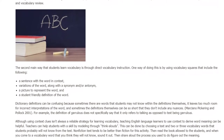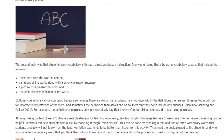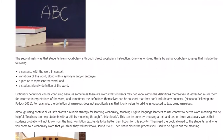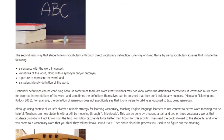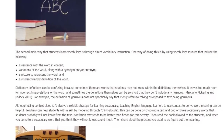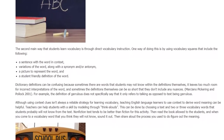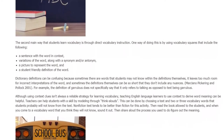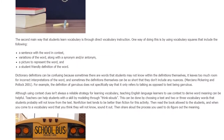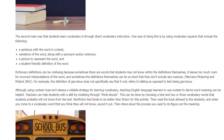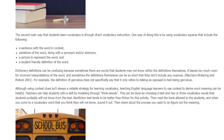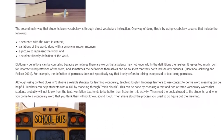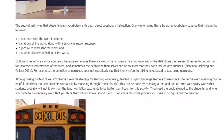Marzano, Pickering and Pollock, 2001. For example, the definition of garrulous does not specifically say that it only refers to talking as opposed to text being garrulous. Although using context clues isn't always a reliable strategy for learning vocabulary, teaching English language learners to use context to derive word meaning can be helpful. Teachers can help students with this skill by modeling through think alouds.